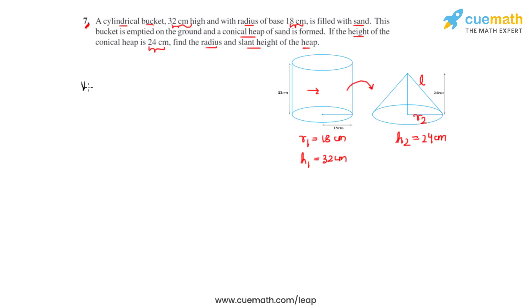So we can here say that the volume of the cylinder which is the bucket will be equal to the volume of the heap which is in the shape of a cone.